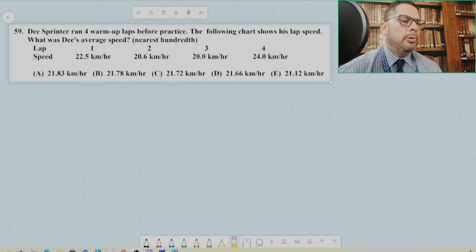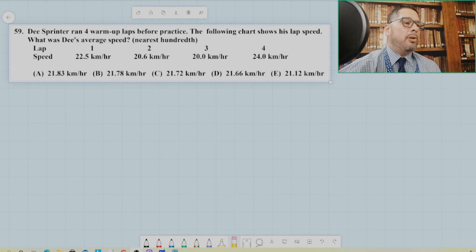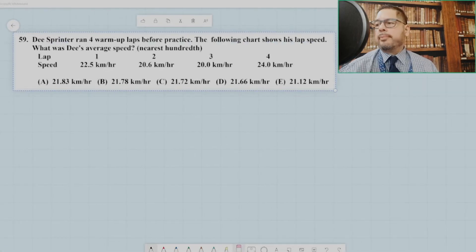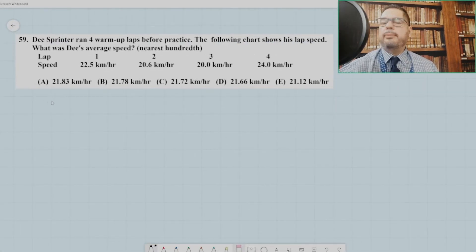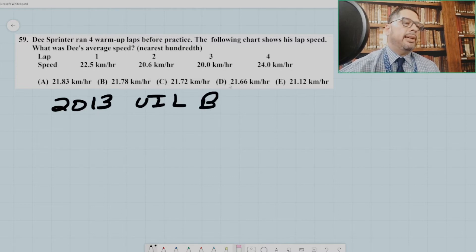Okay, so the first problem I want to look at that illustrates how the harmonic mean can be used to solve an average speed problem is problem number 59 from 2013 UIL B.